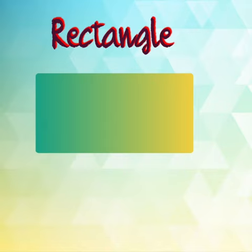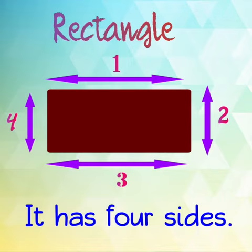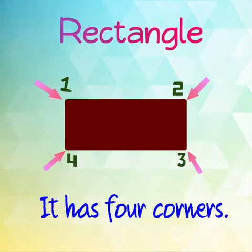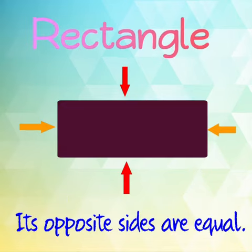So, in a rectangle we have four sides. It has four sides, it has four corners, and its opposite sides are equal. Okay?